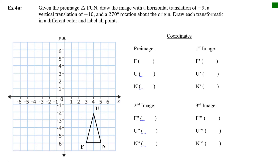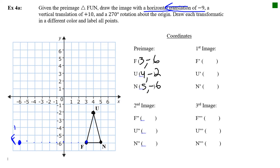Example 4: Given the pre-image triangle FUN, draw the image with a horizontal translation of −9, a vertical translation of +10, and a 270-degree rotation about the origin. Draw each transformation in a different color and label all points. F is at (3, −6), U is at (4, −2), and N is at (5, −6). We're going to do each transformation in the exact order given.